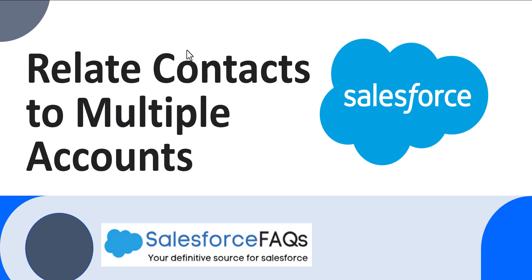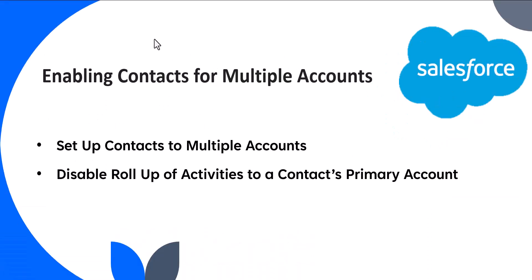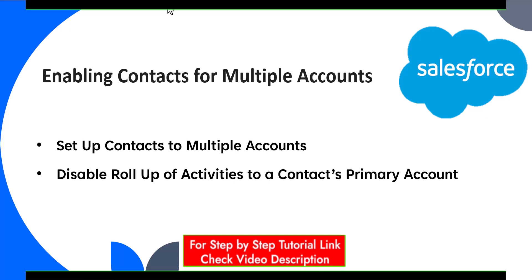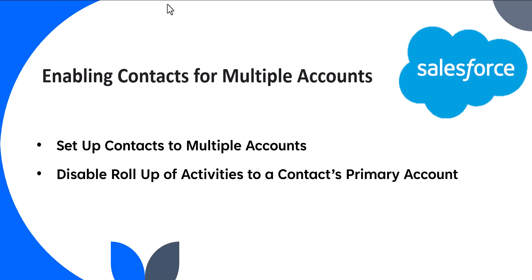Let's start. First, let me tell you what we are going to learn in this video. For enabling contacts for multiple accounts, we are going to first set up the contacts for multiple accounts. I will also show you how to disable rollup activities for the contact's primary account, because when you enable the contact for multiple accounts, the work activities of that contact will be visible on the primary account. There are many scenarios where a requirement exists for relating one contact to multiple accounts — for example, if a person works with multiple companies or has different roles across organizations.